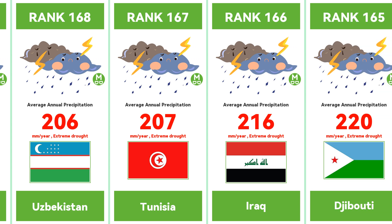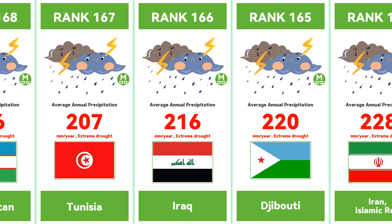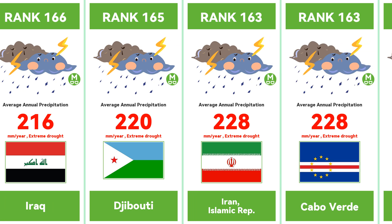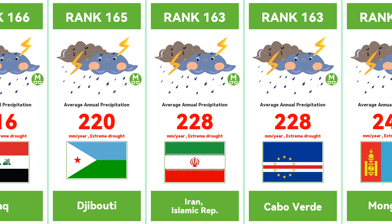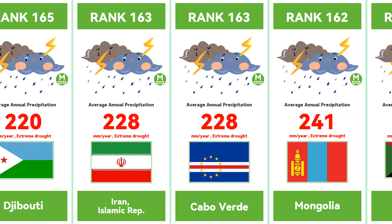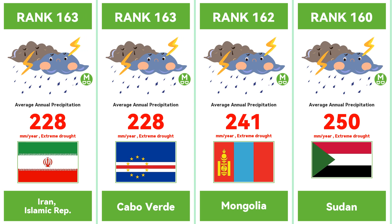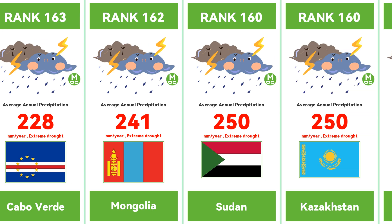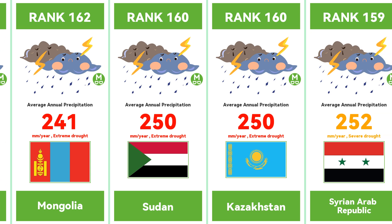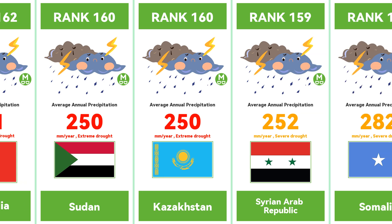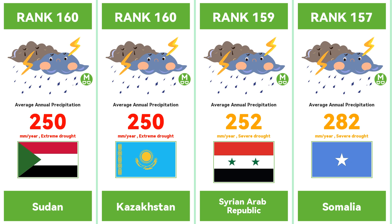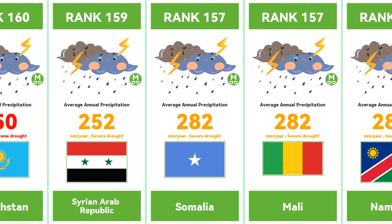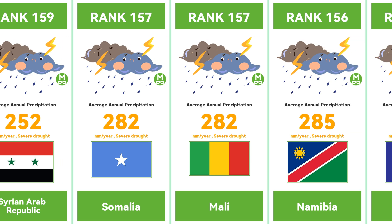The average annual rainfall varies greatly worldwide. Some countries have a humid climate with annual rainfall exceeding 2,000 millimeters, and are typically located in tropical regions such as Brazil, the Democratic Republic of Congo, and Indonesia. The high rainfall in these areas supports lush rainforests and biodiversity, as well as providing abundant water resources for agriculture.